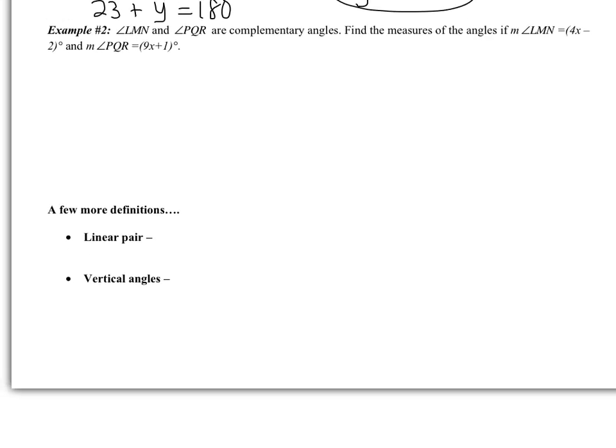Looking at example two: angles LMN and PQR are complementary. Find the measures of the angles if LMN equals 4X minus 2 and PQR equals 9X plus 1. Complementary angles sum to 90 degrees. Pause the video and try this one on your own using the fact that complementary angles sum to 90. Come back when you're finished and we'll go over it together.